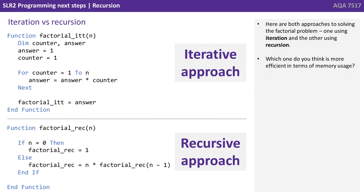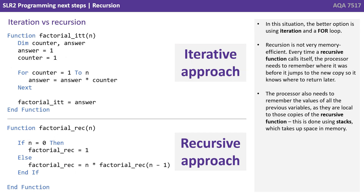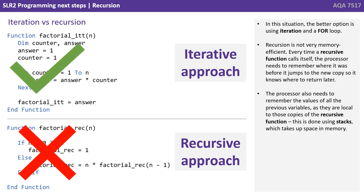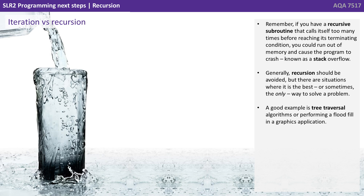Here are both approaches to solving the factorial problem — one using iteration and the other using recursion. Which one is more efficient in terms of memory usage? In this situation, the better option is actually using iteration and a for loop. Recursion is not very memory efficient. Every time a recursive function calls itself, the processor needs to remember where it was before jumping to the new copy, so it knows where to return to later. It also needs to remember the values of all previous variables, as they're local to those copies of the recursive function. This is done using stacks, which takes up space in memory. If you have a recursive subroutine that calls itself too many times before reaching its terminating condition, you could run out of memory and cause the program to crash — known as a stack overflow.